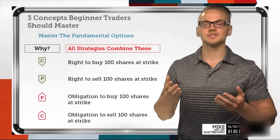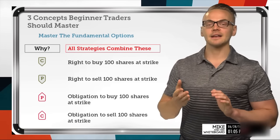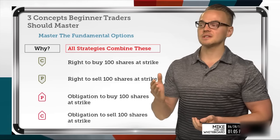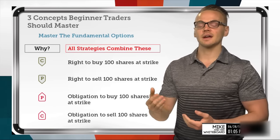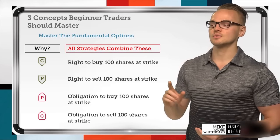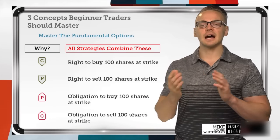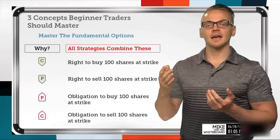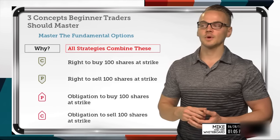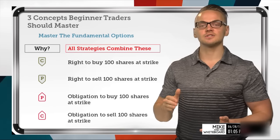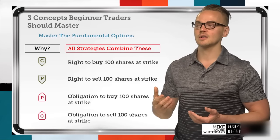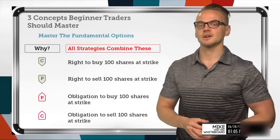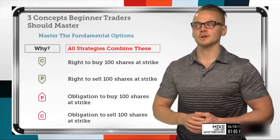A long call is the right to buy 100 shares of stock at a certain strike price. If I own the call contract I can exercise it before expiration, which gives me the right to buy those 100 shares, or I can let it expire and if it's in the money it will automatically exercise into long shares. Similarly, a long put is just the opposite — I have the right to sell 100 shares at the strike, and if it's in the money at expiration it'll automatically exercise into short shares.